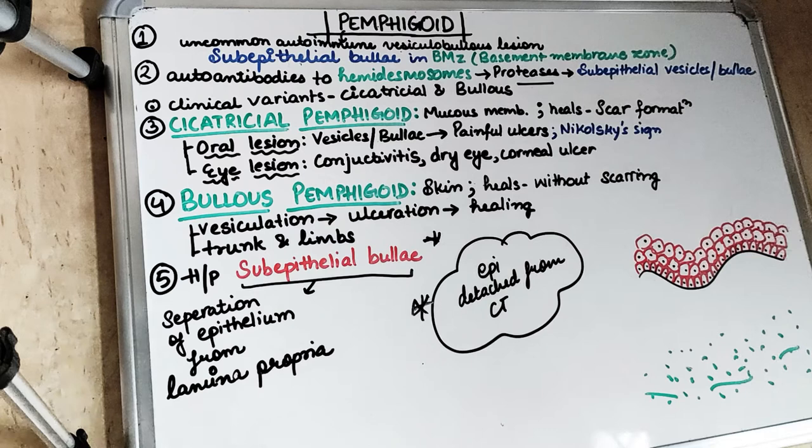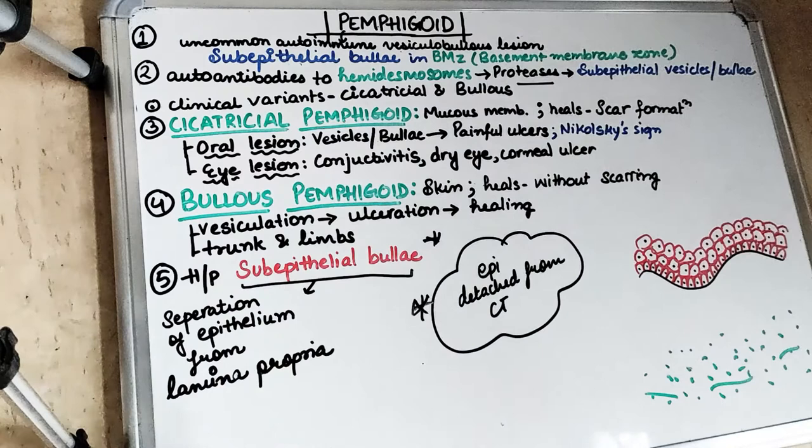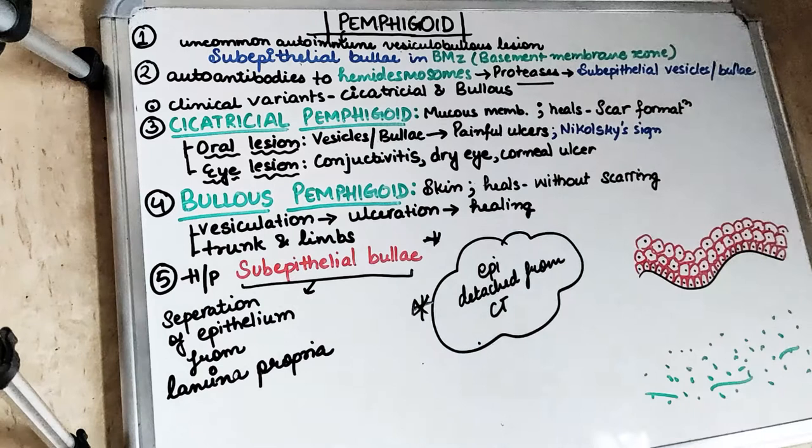Welcome back to another 5 in 5 series where we cover each topic under 5 headings in 5 minutes. Today's topic is pemphigoid. This is an uncommon autoimmune vesiculobullous lesion, in which vesicles and bullae are formed in the skin and the mucous membrane. There is sub-epithelial bulla formation in the basement membrane zone.